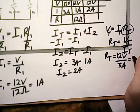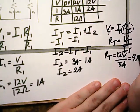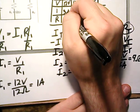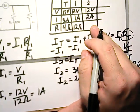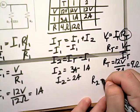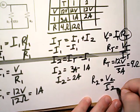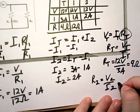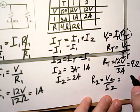So 12 divided by 3, we get 4 ohms. And then we're going to do the same thing for here. R2 is equal to V2 over I2. So we do 12 divided by 2.